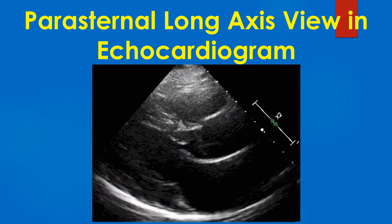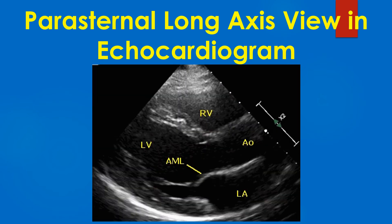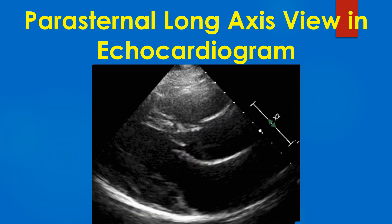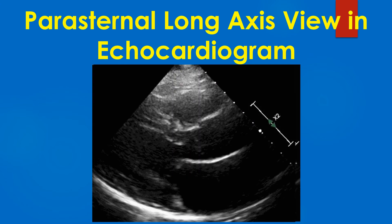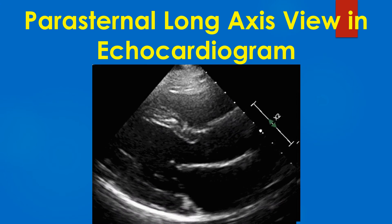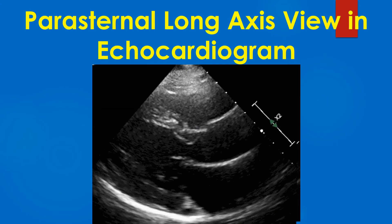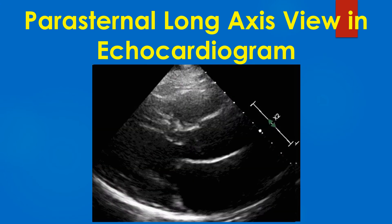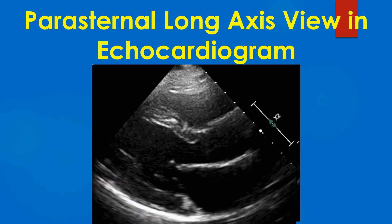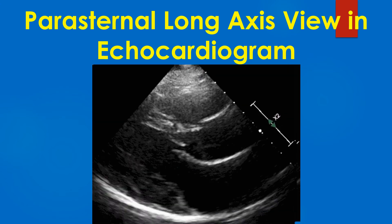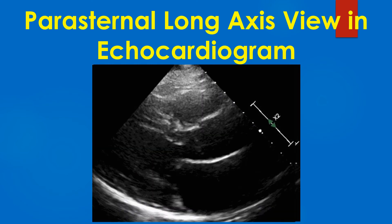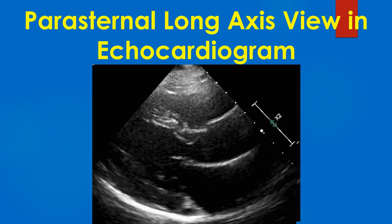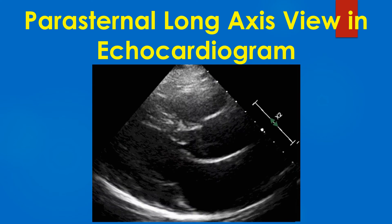Parasternal long axis view is often the first view obtained during an echocardiographic study. It is used to guide M-Mode echocardiography for left ventricular measurements. Initially, the parasternal long axis view is obtained, and when satisfactory images are available after fine adjustments of the transducer position, the M-Mode cursor is placed at the chordal level. Then the M-Mode button is pressed so that M-Mode tracings are obtained.